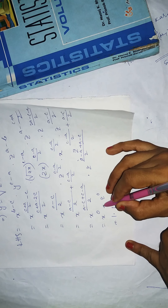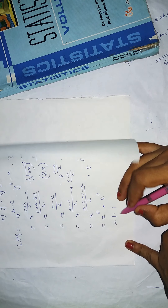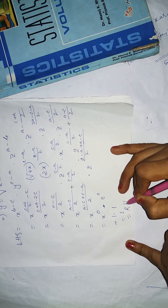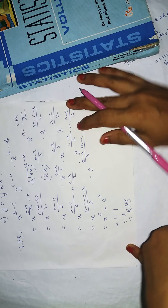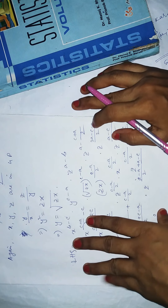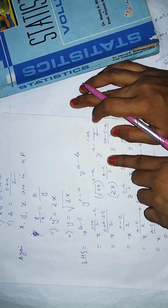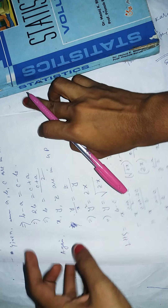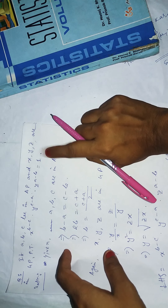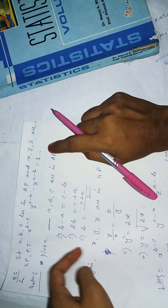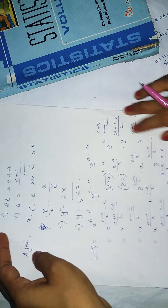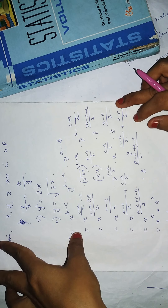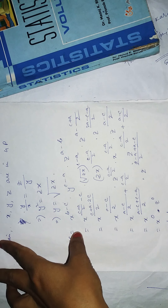This equals 1, which is the right hand side we were asked to prove. So the proof is complete. This is today's question — as homework, you are given another similar question to solve on your own.